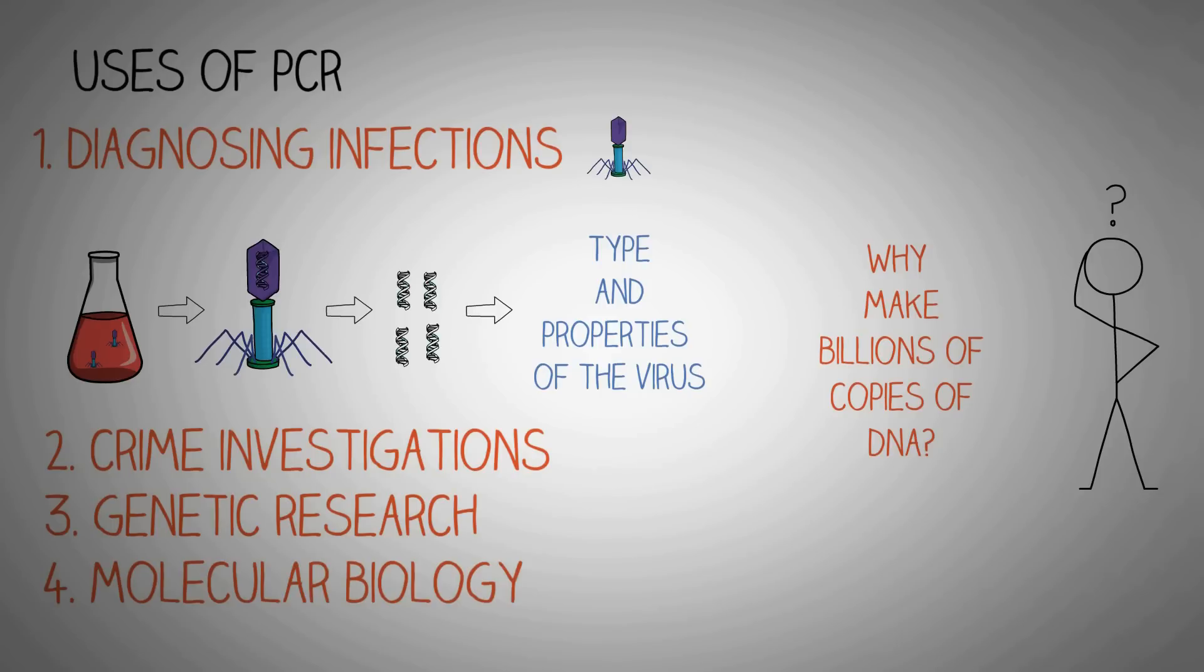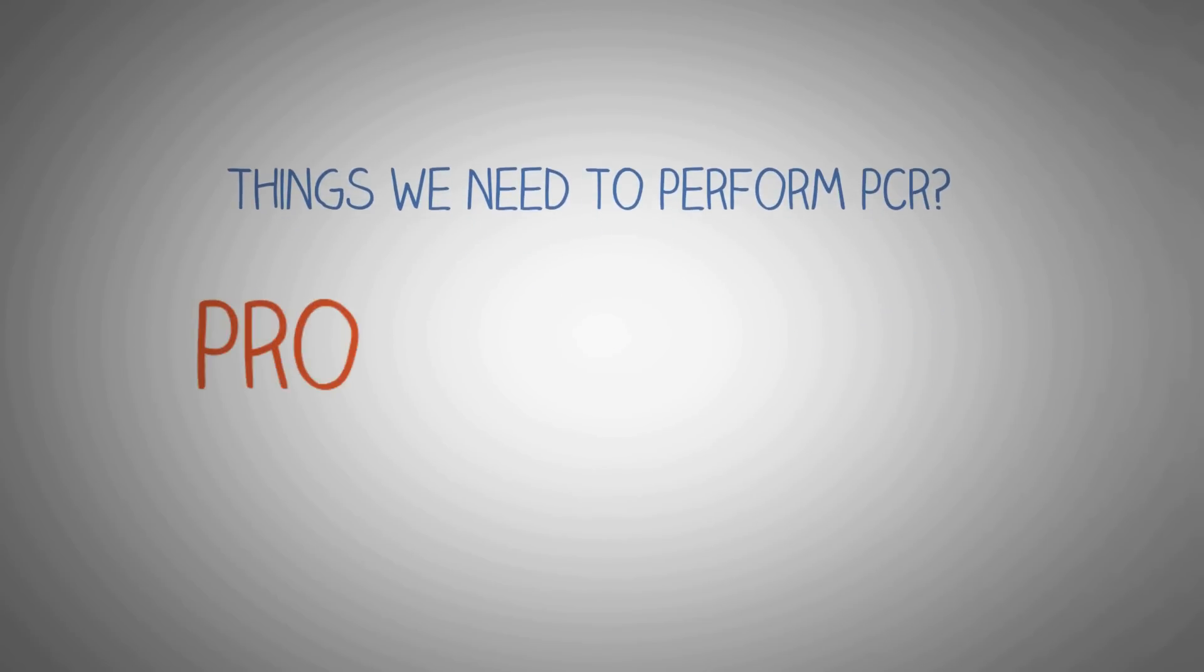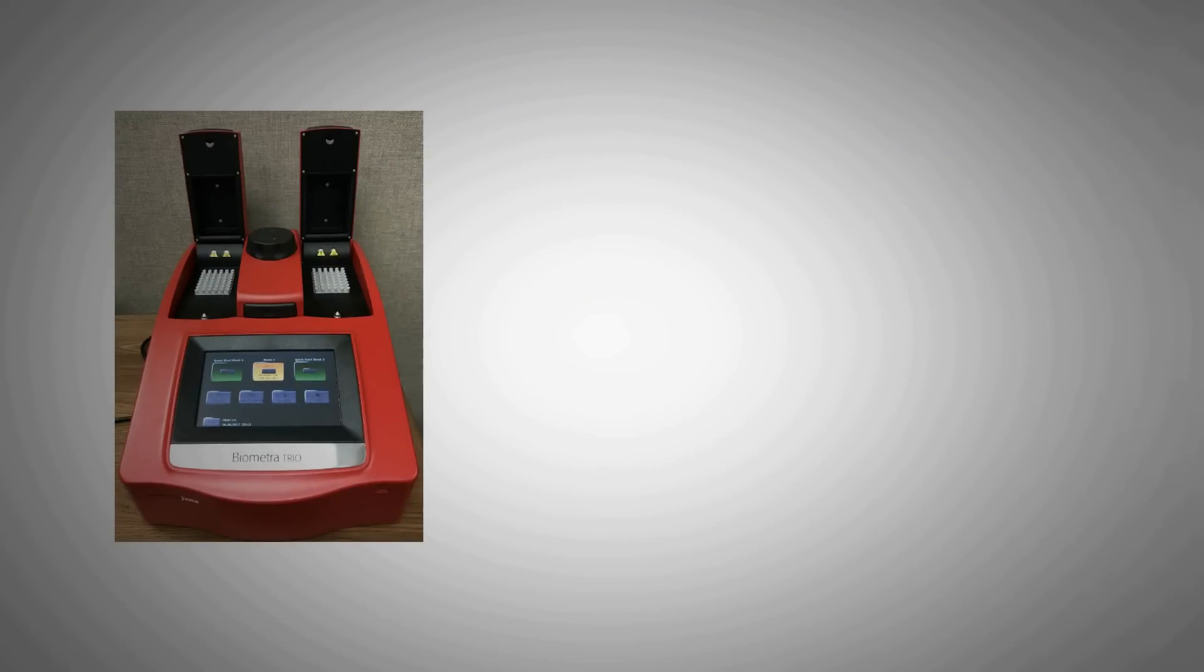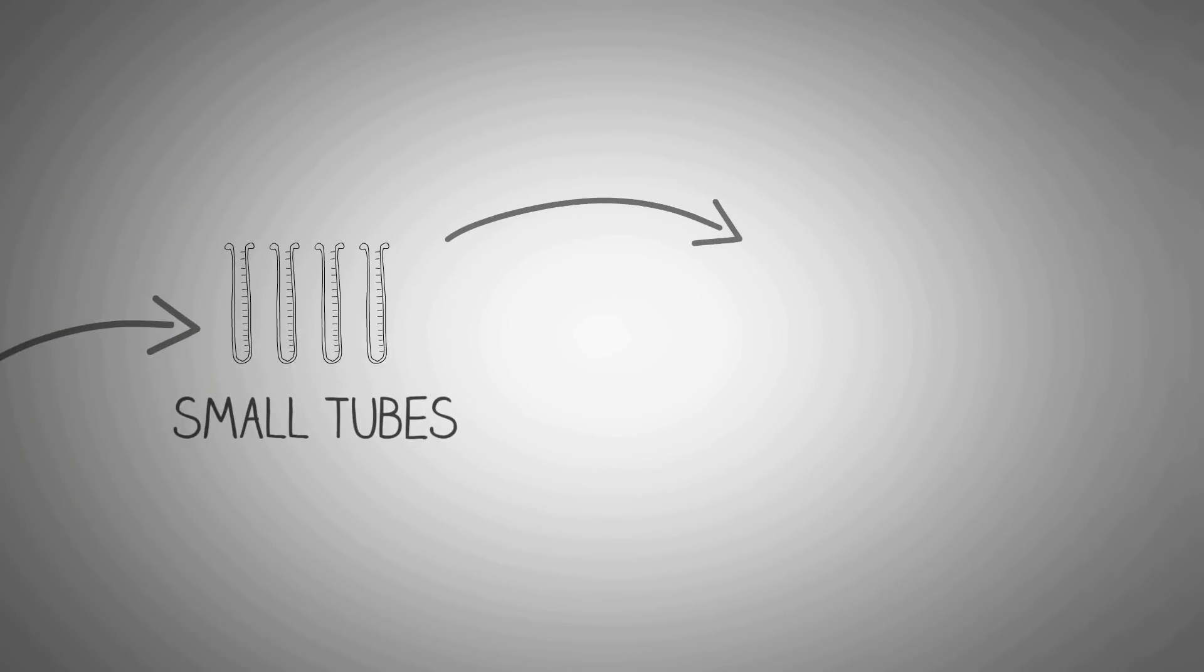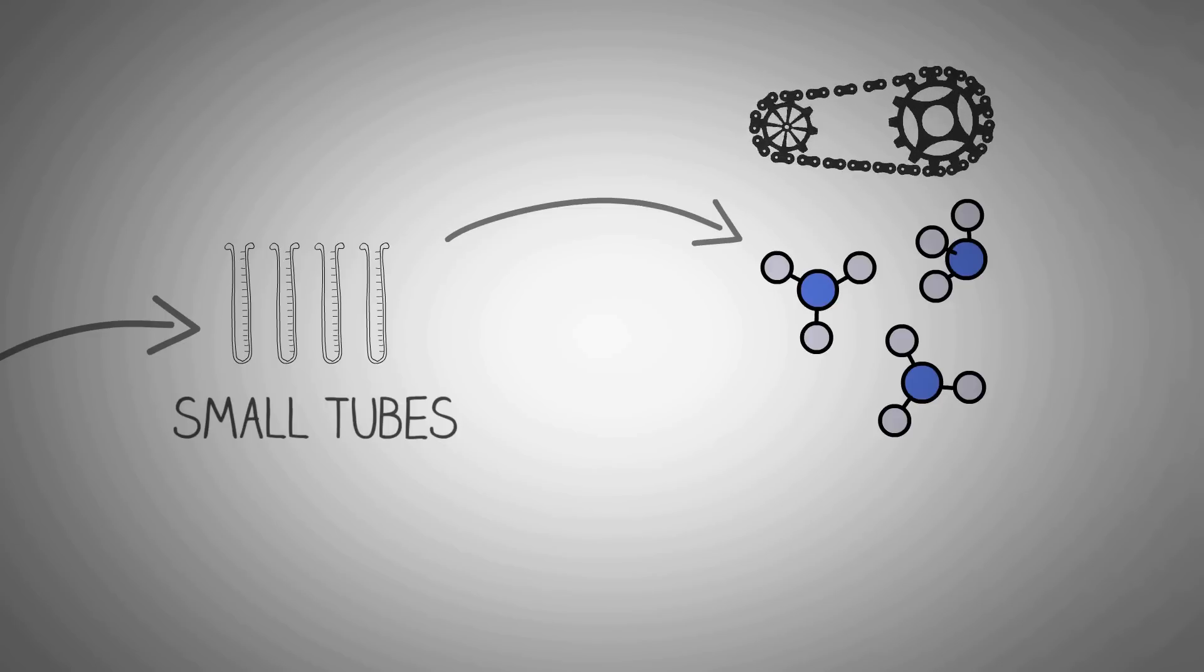Now let's first talk about what are the things that we need to perform PCR and then we will discuss how this process happens. The most commonly used equipment in PCR is the thermal cycler, also known as the PCR machine. Inside the PCR machine we have these small tubes in which all the chemicals are inserted and the reaction takes place.